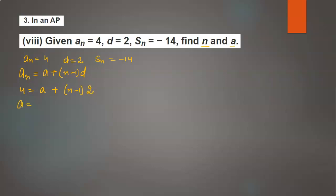The value of a: we will get 4 = a + (n-1)×2, so 4 - (n-1)×2. 4 minus 2 is multiplied with this bracket, so we will get 2n minus... plus 2. So 4 + 2 is 6 minus 2n. The value of a is 6 - 2n.